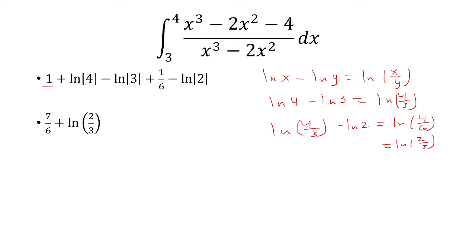And now we just do 1 plus 1 sixth is 7 over 6. So our final answer is 7 over 6 plus ln of 2 thirds.